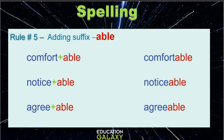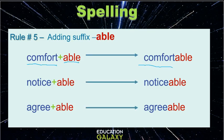We add the suffix ABLE to a root word when it is a full word, such as comfort. You add able at the end to make comfortable. From notice to noticeable. Agree to agreeable.